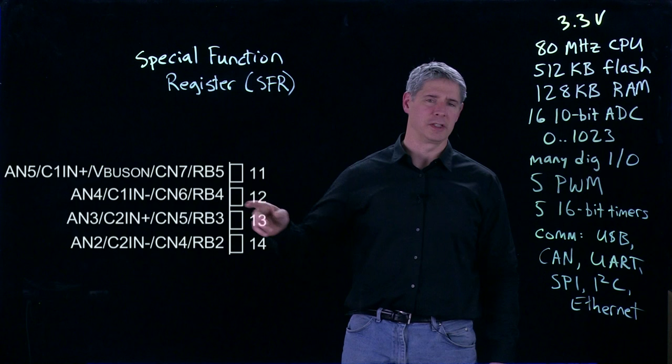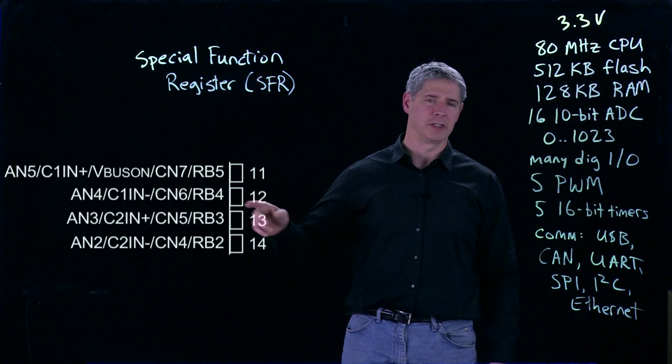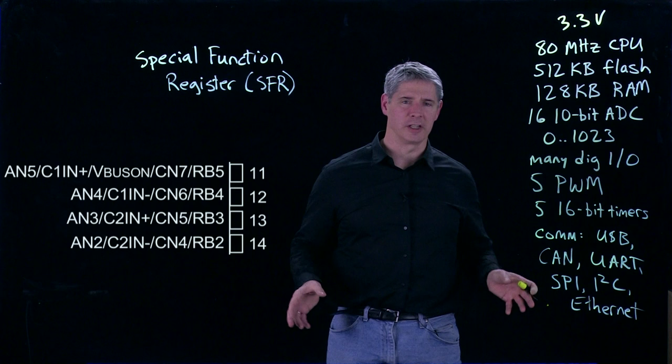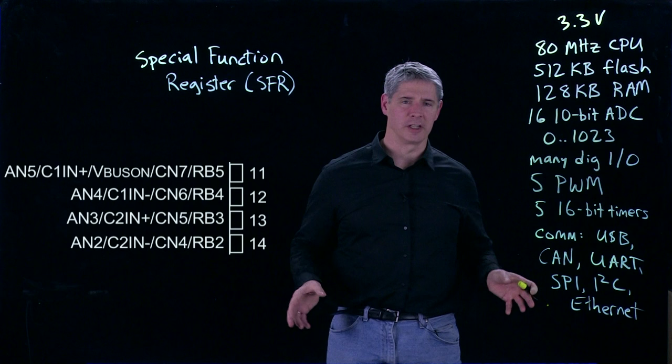We'll be seeing special function registers over and over as we study how the PIC32 works, because they're the main interface between the CPU and the various peripherals that surround it. The CPU writes data to the special function register, which is interpreted by the peripheral circuits. When the peripheral circuits have data to send back to the CPU, they write to the special function registers, and the CPU accesses that.